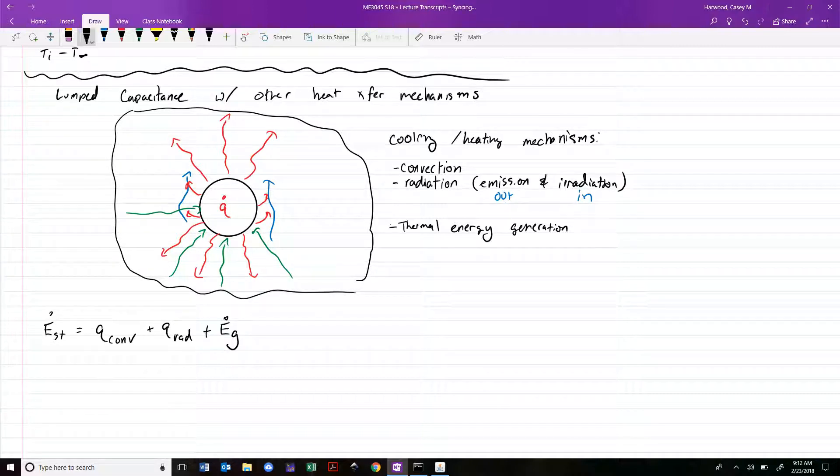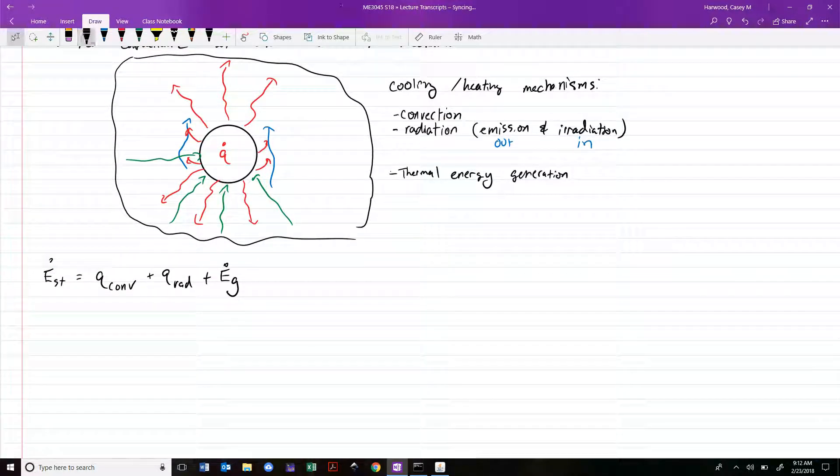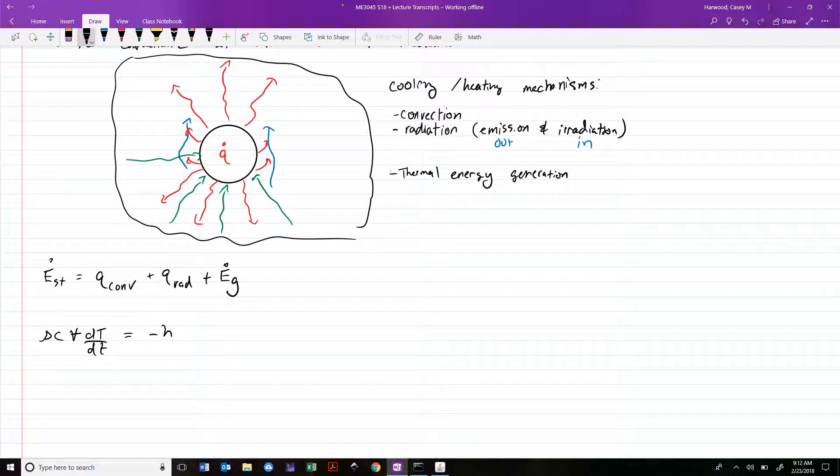Notice that in this case, we have signed these so that Q convection would be signed convective heating, radiation would be radiative heating, and this would be something positive. We're going to have to put negative signs in front of these to account for the fact that thermal energy is actually flowing out. So writing out using our rate equations that we established before, we could go ahead and write rho C V DT/DT equal to negative H surface area T B minus T infinity.